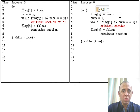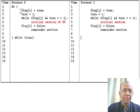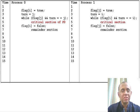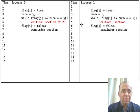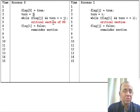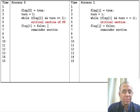Similarly, there is another process called process 1. These do-while loops are simply representing the nature of this task — both codes can be repeated, meaning both processes can enter their critical sections multiple times. So for process 0, I'm going to change every i to 0 and every j to 1.